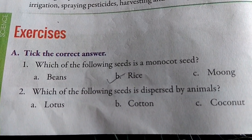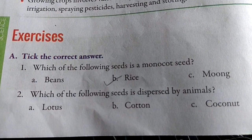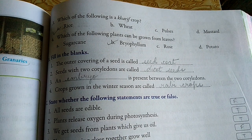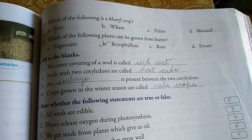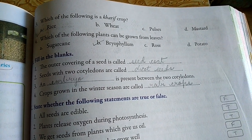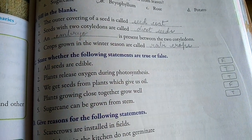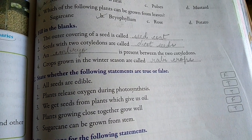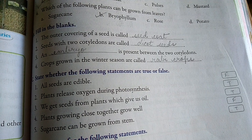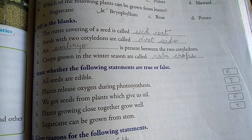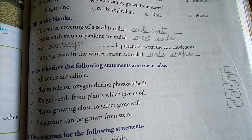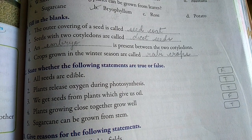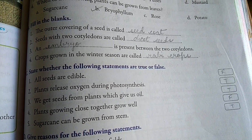Question number A, tick the correct option — four questions are there. Please write the options also and tick the correct answer. Next, question number B, fill in the blanks — I have written the answers, so please write the questions and answers nicely. Question number C, state whether the following statements are true or false — I have written the answers, so please write the questions. Don't make any mistakes in spelling. Write it very nicely and beautifully in your copy. That's all for today. The next day we will continue with the rest of the questions. Thank you.